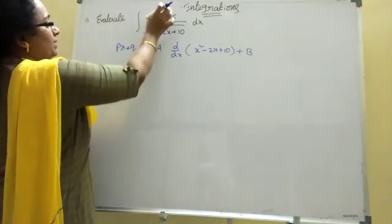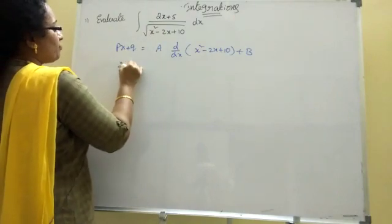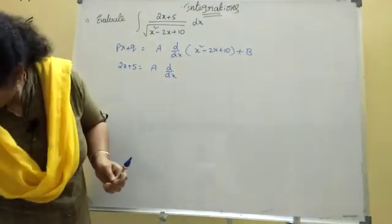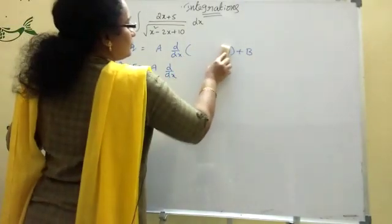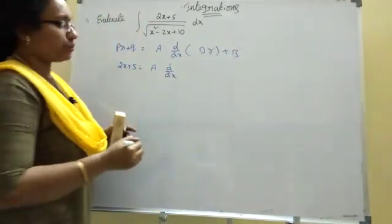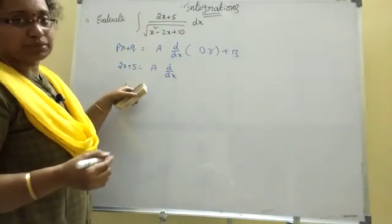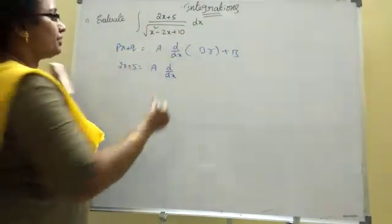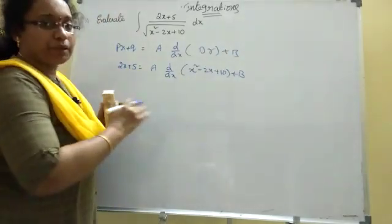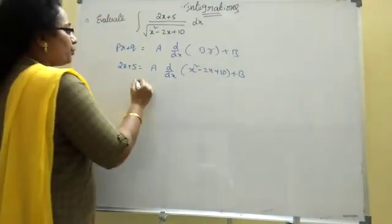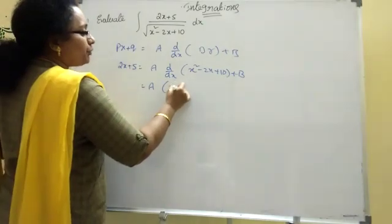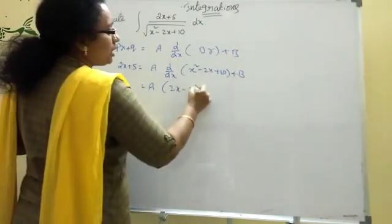Next, Px plus q equal to 2x plus 5, right? 2x plus 5 equal to A into d by dx of - plus B, this is the formula. Now, Px plus q equal to A into d by dx of denominator. A into x square minus 2x plus 10 plus B. First of all, numerator equal to A into d by dx of denominator. Now, A into d by dx of denominator. So x square derivative is 2x, right? 2x minus 2x derivative is 2 plus B.